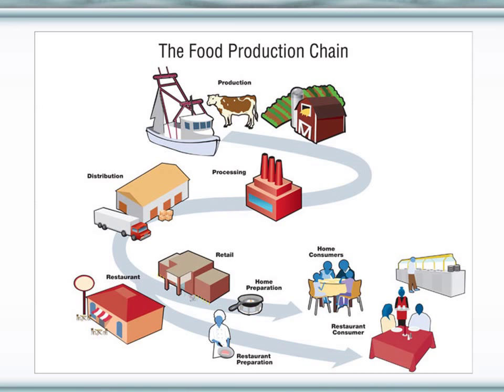Either way, there are many steps at which food is going to be processed and handled by different people. It's going to touch different equipment, and because of all those factors — not to mention the fact that it's going to be at different temperatures during some of those time frames — there's going to be a very high risk for that food being contaminated. So the government must monitor each aspect of food production to ensure that we have a safe food supply.